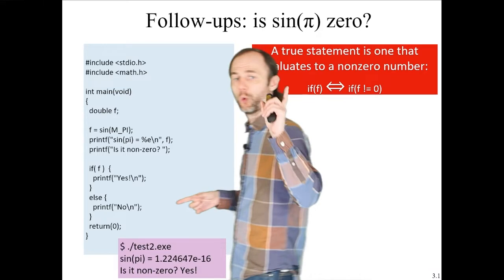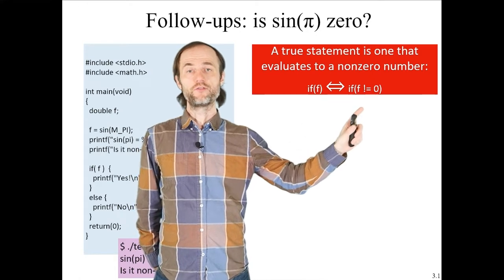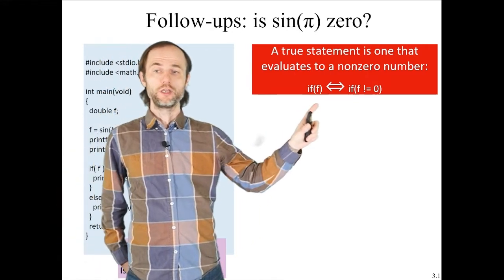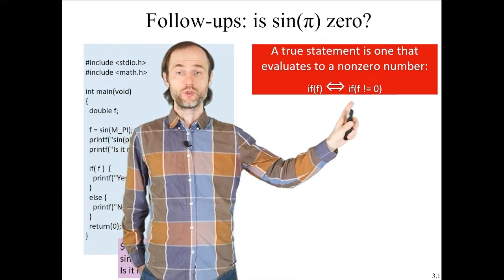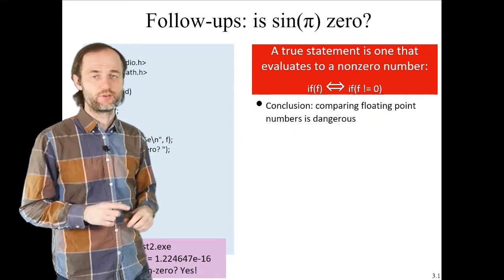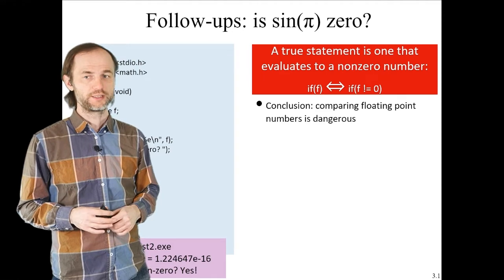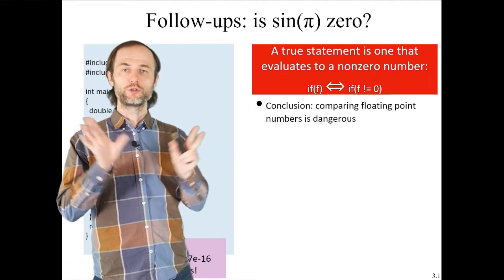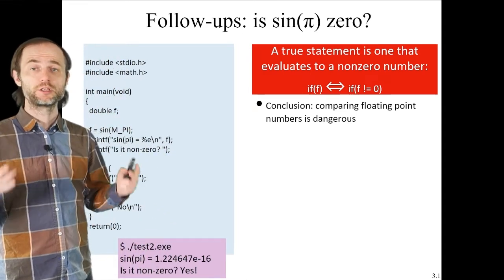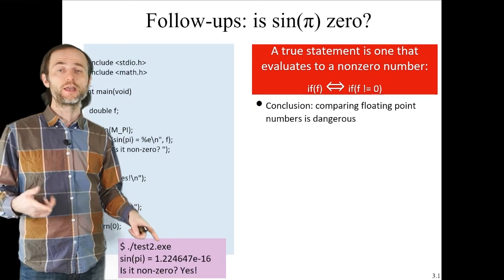To recap: we used the statement 'if f', which is equivalent to 'if f not equal to zero.' Anything other than zero is true. So if f is even a tad different than zero, 'if f' will be true and therefore it won't be exactly zero. Comparing two floating point numbers is dangerous — depending on implementation, compiler, math libraries, or hardware architecture, you can get different answers for sine of pi.